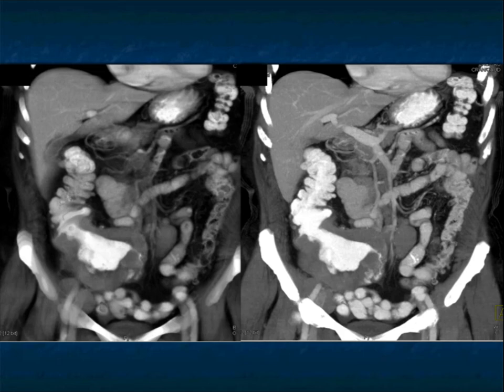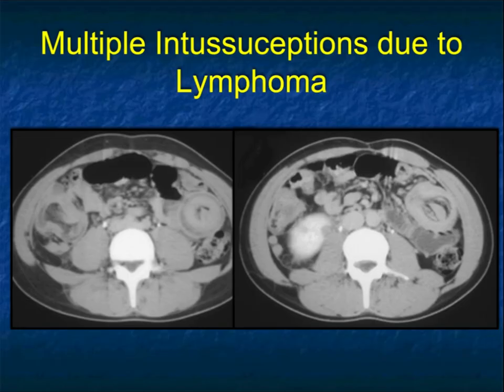This is a good example of where positive contrast works very nicely. You see the infiltration of the wall of the bowel, the lumen, and the ulceration present. One of the things with lymphoma is it can cause intussusceptions. Essentially every mass in the small bowel can intussuscept — be it benign like a leiomyoma or lipoma, or metastasis, adenocarcinoma, or carcinoid. When you have multiple intussusceptions, then you're thinking about lymphoma.